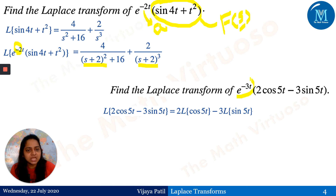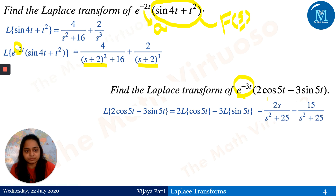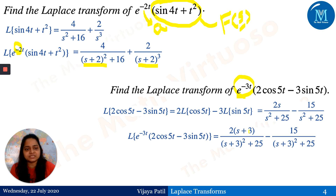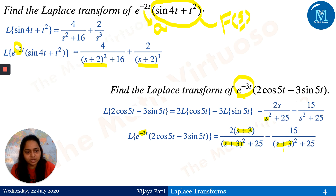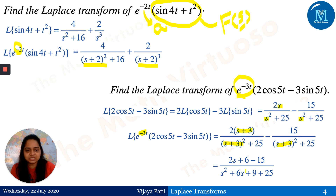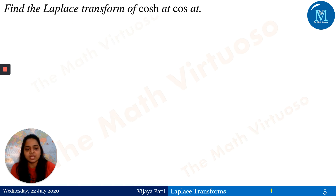For the next example: Laplace of e^(-3t)·(2cos5t - 3sin5t). Setting aside e^(-3t), I find the Laplace of (2cos5t - 3sin5t) by linearity: 2·[s/(s²+25)] minus 3·[5/(s²+25)], giving (2s-15)/(s²+25). Then I replace every s by s+3, since we have e^(-3t), so s² becomes (s+3)², giving the final simplified answer.